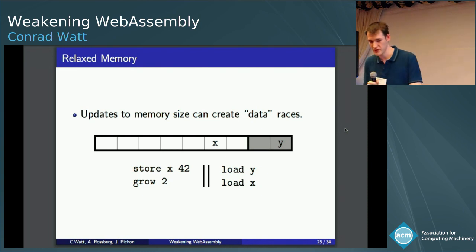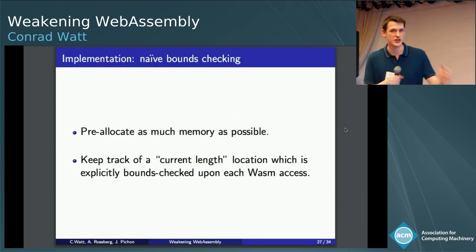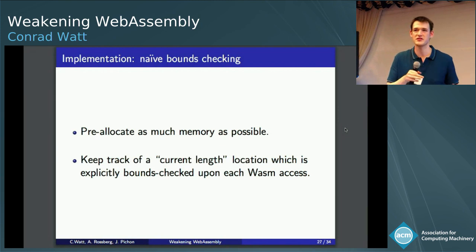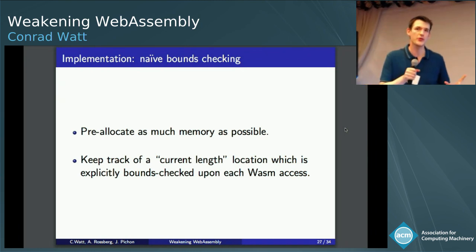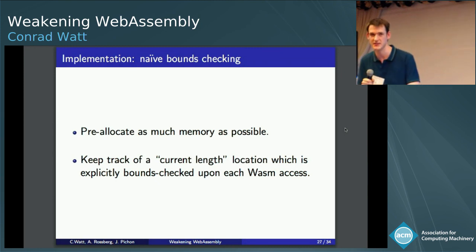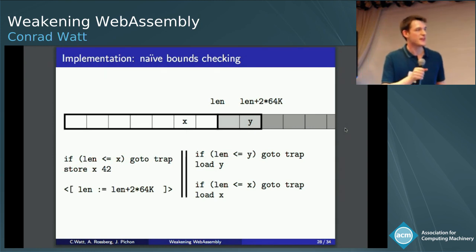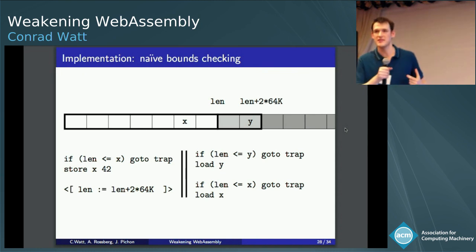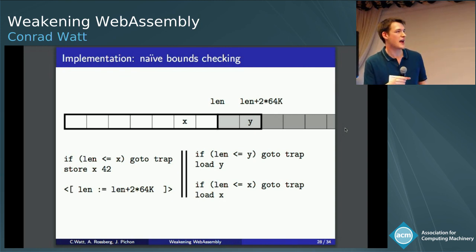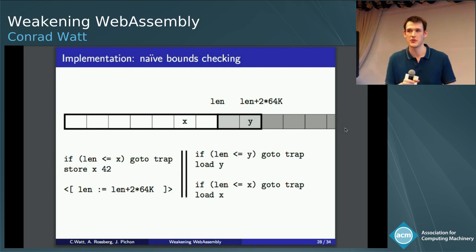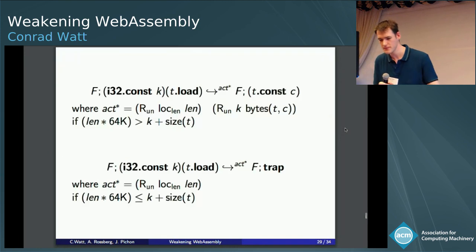So in order to work out how strong we're allowed to make the model, we have to look at some real implementations. So here is the most naive implementation you could probably think of. And some engines have historically used this and continue to use it on mobile devices, where you pre-allocate as much memory as possible. And then you keep track of a fake current length location that you explicitly bounds check against every time you do a WebAssembly access. So to kind of render my previous example into pseudocode, now you can see that I've explicitly guarded every load and store with a check to see if the length is large enough to do the access. And if it's not, I go to this trap location. And I've replaced my memory growth with an atomic update to the length. So unfortunately, if you compile this to some architectures, you really do see the relaxed behavior.